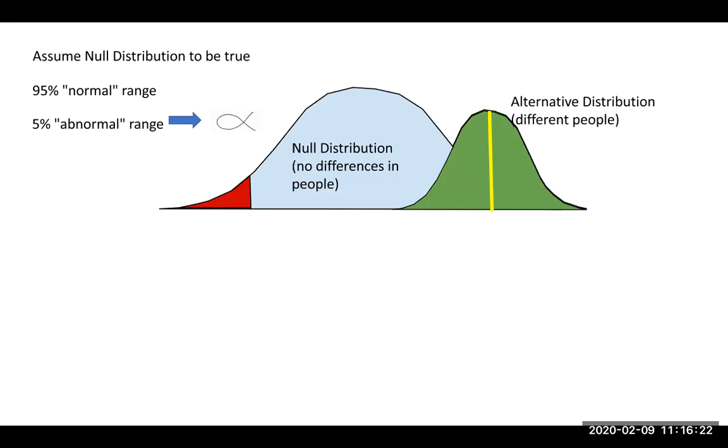So what statisticians are saying is we're not 100% sure what's happening with Bob. But because we put these red zones as our cutoffs, we're saying that if you're in the red zone, then that usually means it's more likely that you're from a green distribution than it is from being a blue distribution because you're being so rare from that blue distribution.